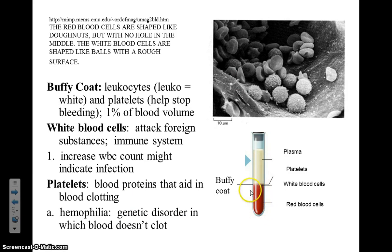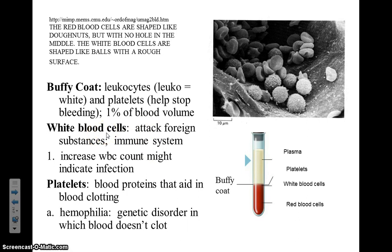Red blood cells make up approximately 45% of whole blood. Approximately 1% of whole blood is called the buffy coat, which includes white blood cells and platelets. White blood cells' predominant role is to fight off foreign material. We will discuss a variety of white blood cells in another video. The primary job of platelets is to aid in blood clotting from internal injury or external bleeding.